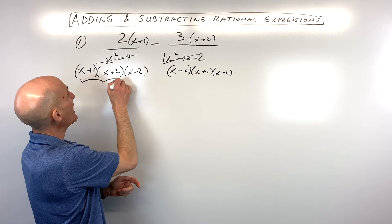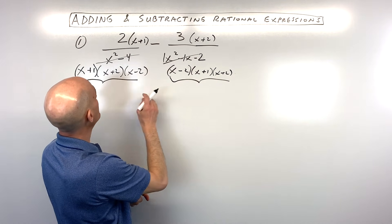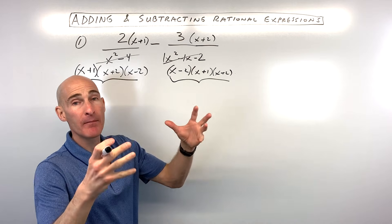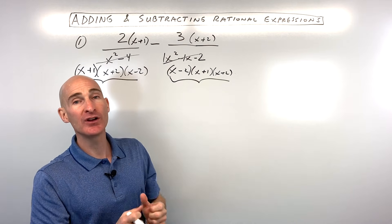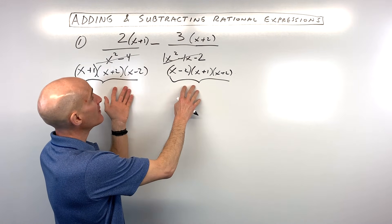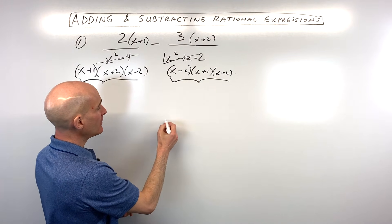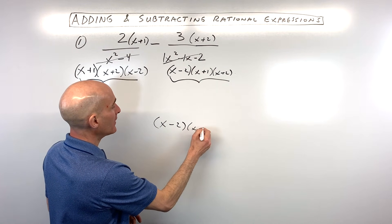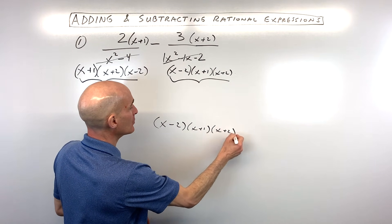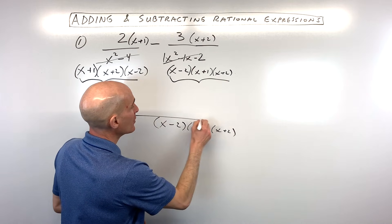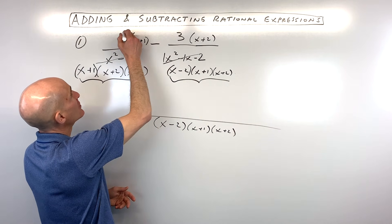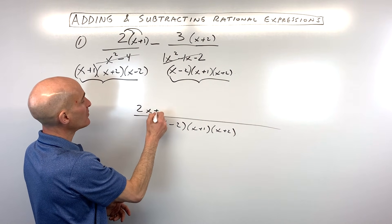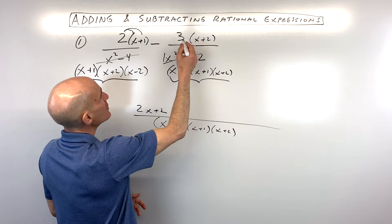Now when you look at both denominators, you can see they're exactly the same. So we can combine these into one fraction with the common denominator of x minus 2, x plus 1, and x plus 2. Let's make one big fraction. I'm going to distribute the 2, giving us 2x plus 2.